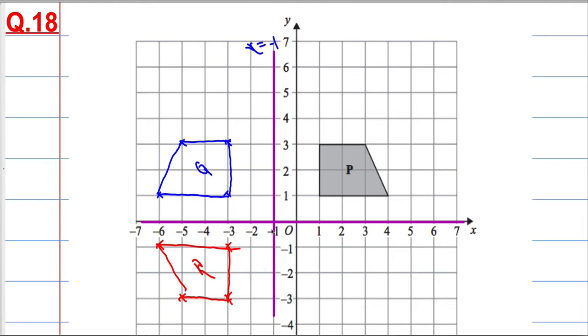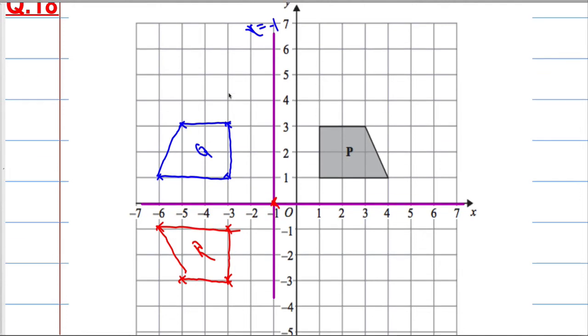So how do we get from here to here? It looks like the shape has been rotated. If I put a center of rotation here and rotate 180 degrees around that, I should get to R. Let's see how this works out to make sure we're doing it properly.